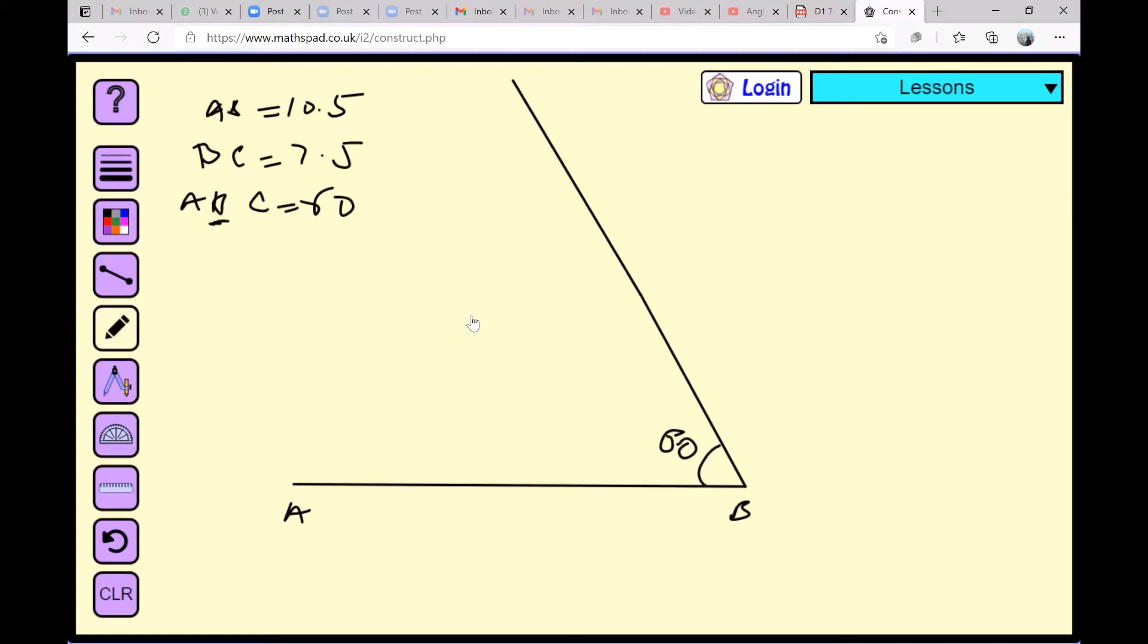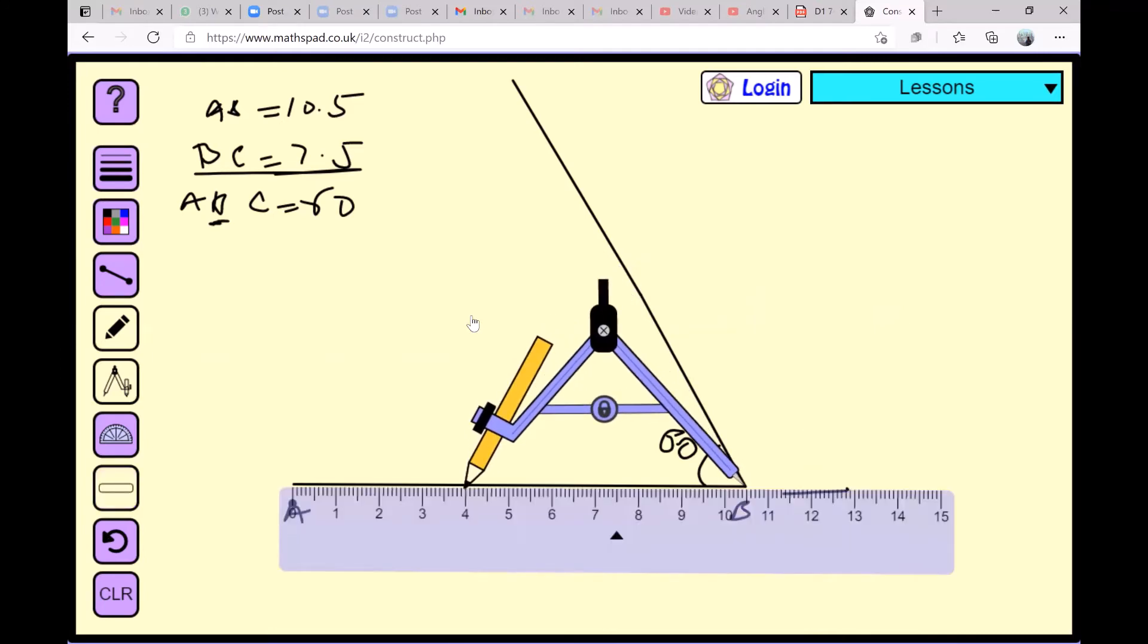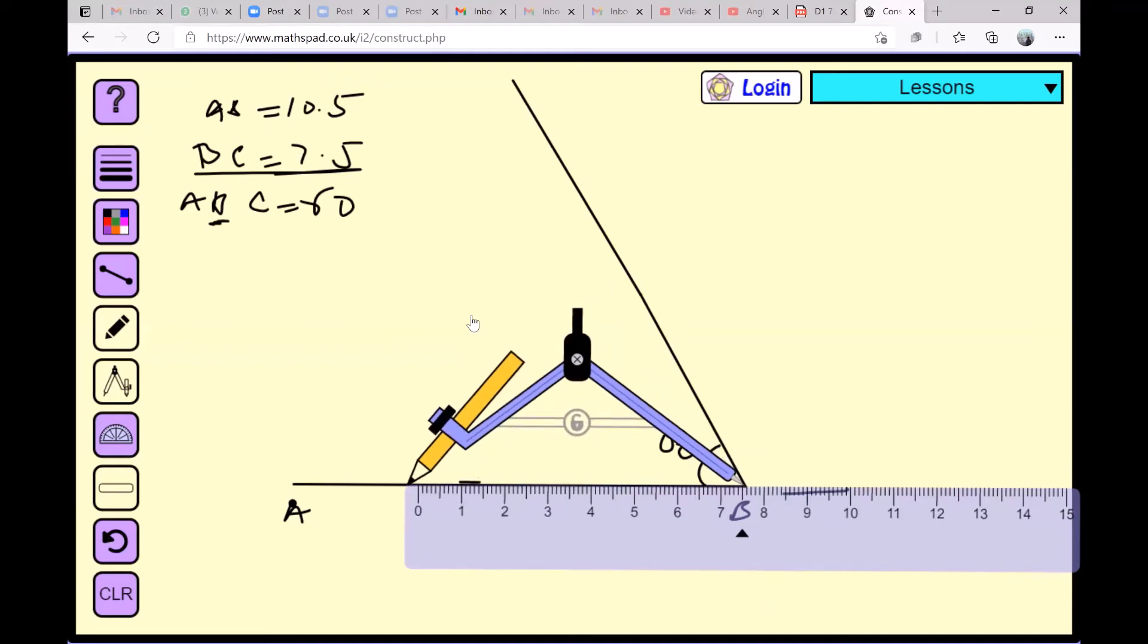Now the length of BC is given, which is 7.5, so what I will do is open my compass to exactly 7.5 length. I'll measure it with the help of a ruler. I'll unlock it and I will open it till 7.5.